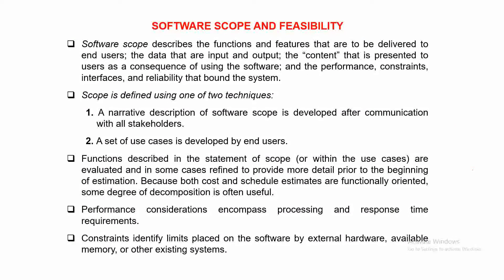The scope is defined using one of two techniques. First, a narrative description — after communication with all the stakeholders. Point-wise narrative description: like in a banking example, credit should happen, debit should happen, and so on. A narrative description of scope covers all the things we need to include in the software.